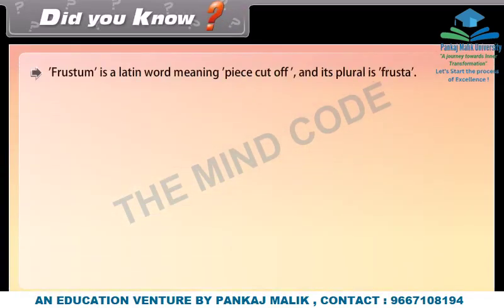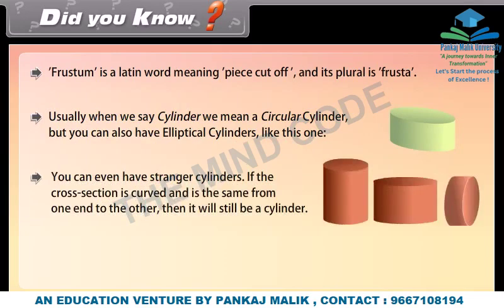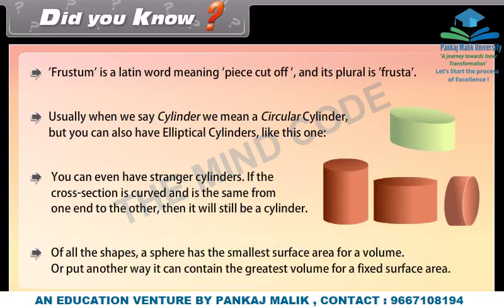Did you know? Frustum is a Latin word meaning 'piece cut off' and its plural is frusta. Usually when we say cylinder we mean a circular cylinder, but you can also have elliptical cylinders. You can even have stranger cylinders — if the cross-section is curved and is the same from one end to the other, it is still a cylinder. Of all the shapes, a sphere has the smallest surface area for a given volume, or put another way, it can contain the greatest volume for a fixed surface area.